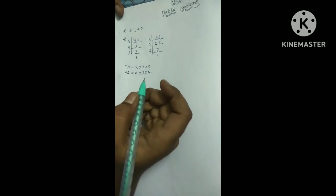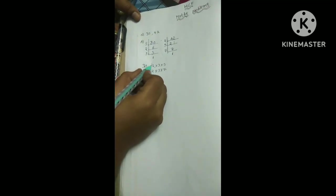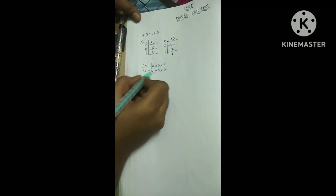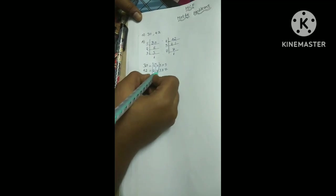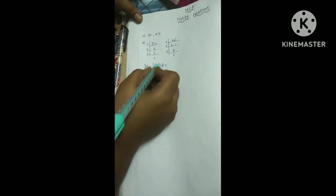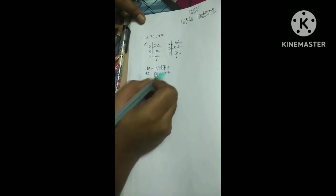Now we should identify the common factor. 2, both are in line. That's why we should make a box. 3 too, same. But 5 and 7 are common? No. That's why no need to write.